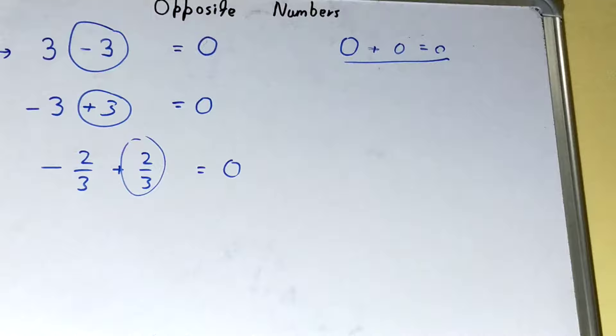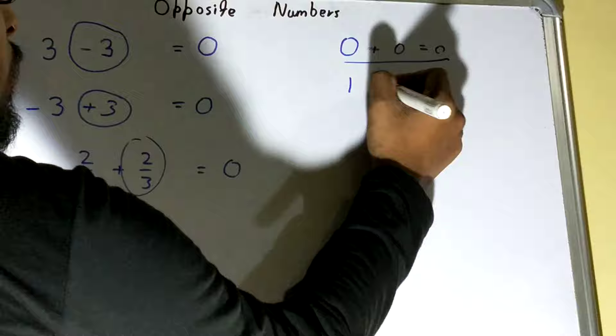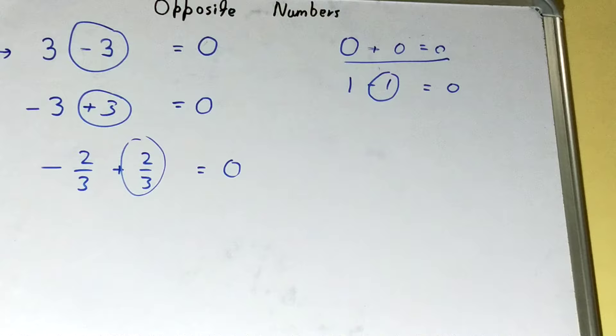The opposite of the opposite of 0, what it will be? Quite tricky, right? So if you add 0 to 0, you will have 0. So you can say the opposite number of 0 is 0 itself. For 1, the opposite number will be minus 1.